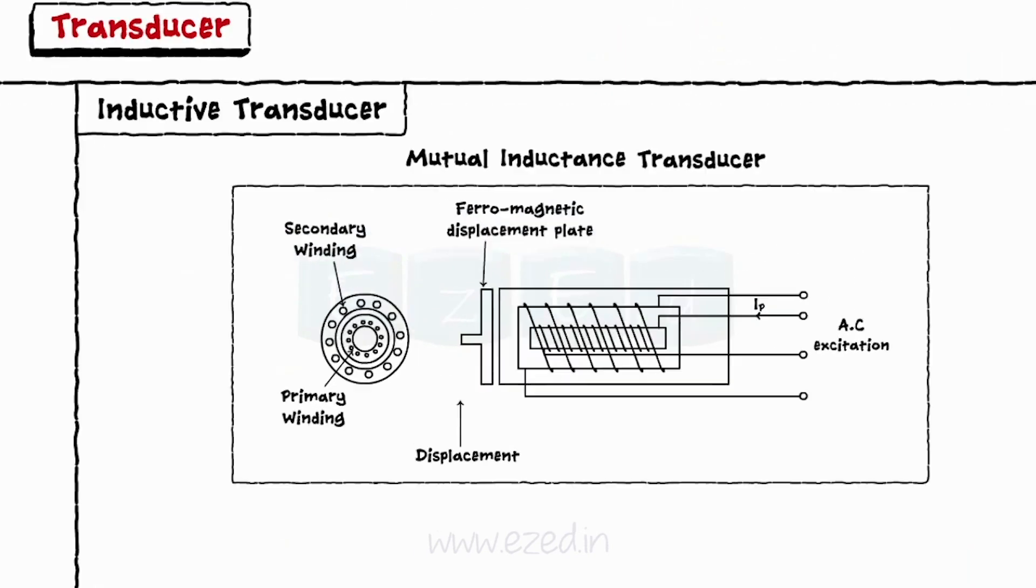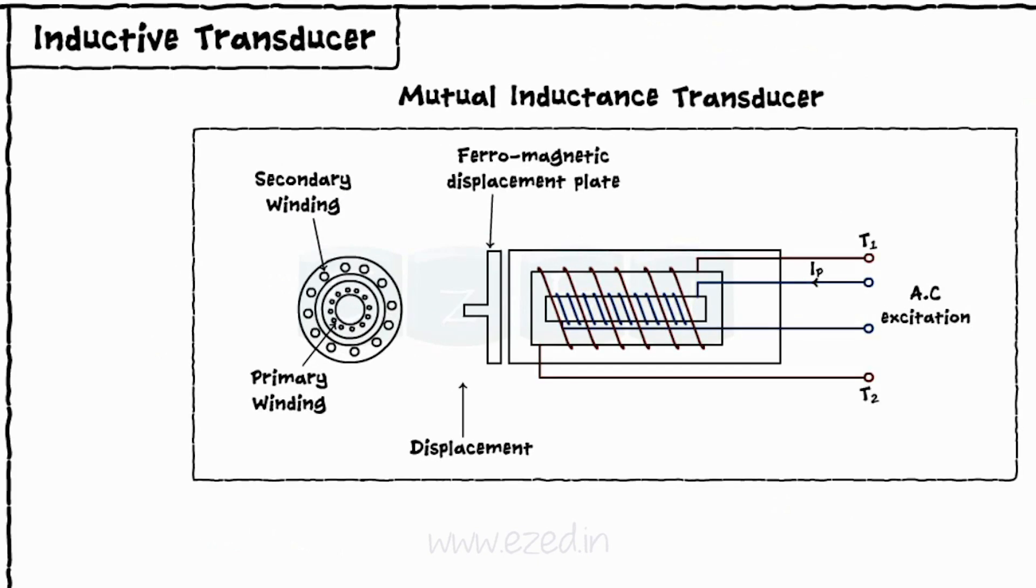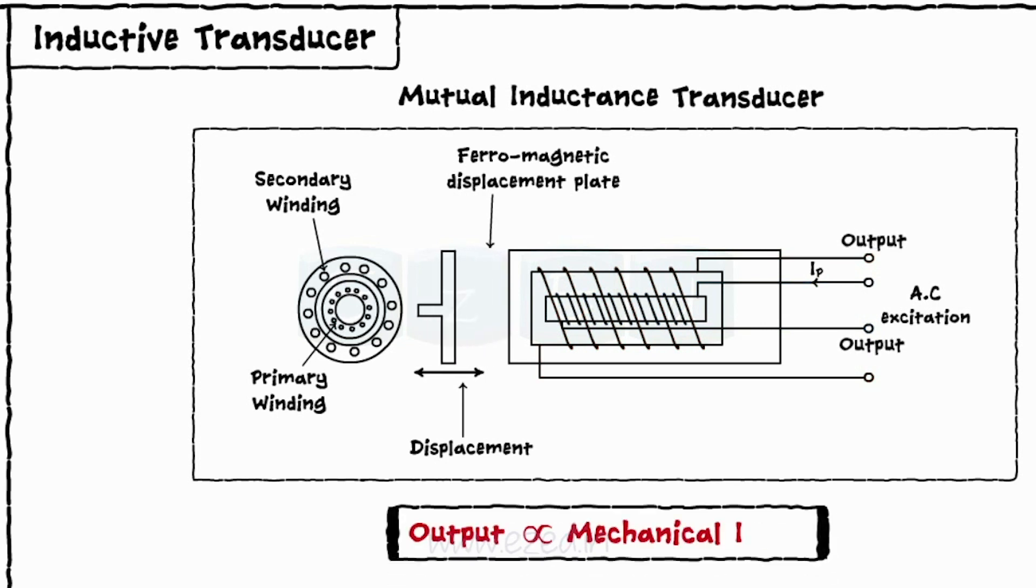In mutual inductance transducer, we have two different coils. In the first coil, the excitation is generated by an external source of power, and in the second coil, the output is obtained. The output is proportional to the mechanical input.